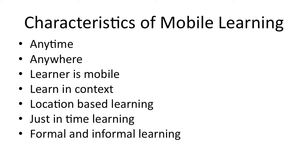Location-based learning allows people to find information and learn about their local environment using mobile devices. Just-in-time learning means people in industry and business can use mobile technology to access information and learn materials right away. For example, if someone is using a piece of equipment, they can use a mobile device to get training on that equipment immediately. Students also use mobile learning for formal learning to earn course credits, and people around the world use it informally to learn information for everyday tasks — for professional development and upgrading themselves.